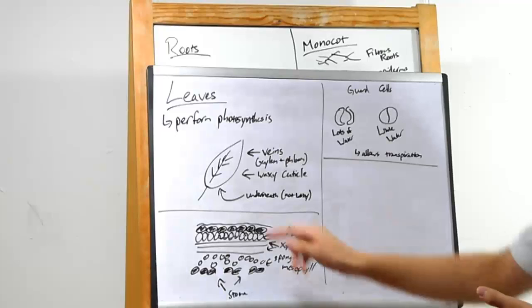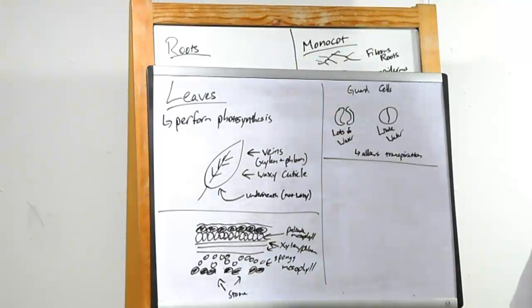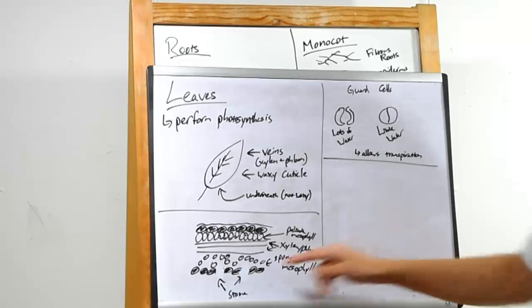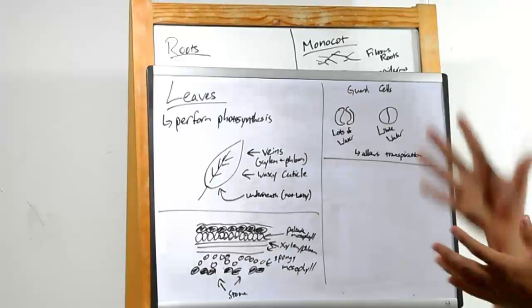Then we have some xylem and phloem, then the spongy mesophyll. This has a lot of holes in it, used for capturing gases. Remember, plants need carbon dioxide to perform photosynthesis and will also release oxygen. You notice that there are some openings here in the epidermis on the lower part. This allows carbon dioxide in and oxygen out.